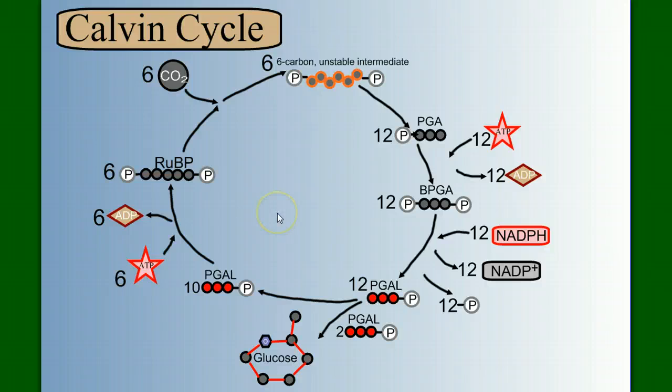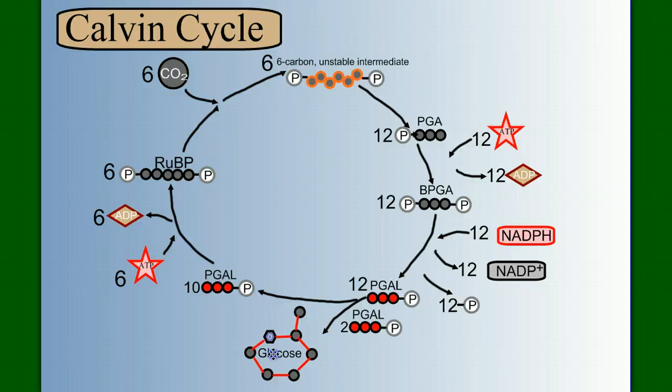Let's remind ourselves where everything that came into this cycle came from. The carbon dioxide came from the air. The ATP and the NADPH and the ATP here all came from the light reactions. And our product is sugar, or at least the precursors to a sugar.